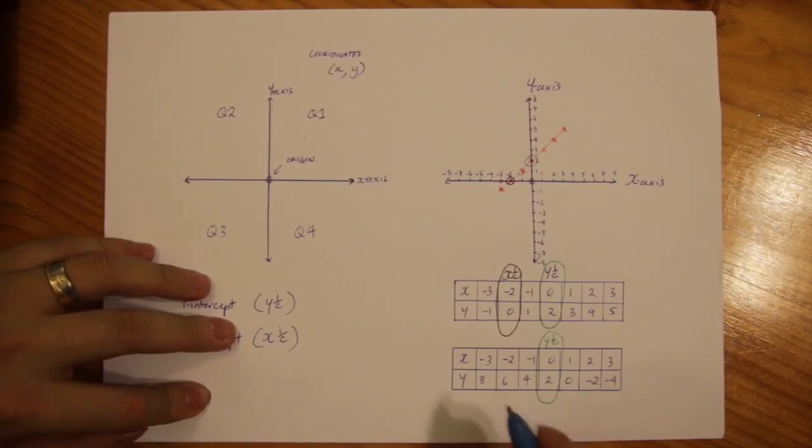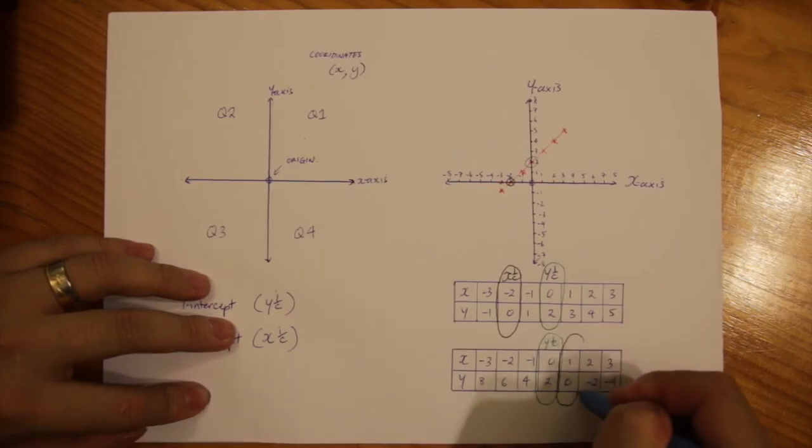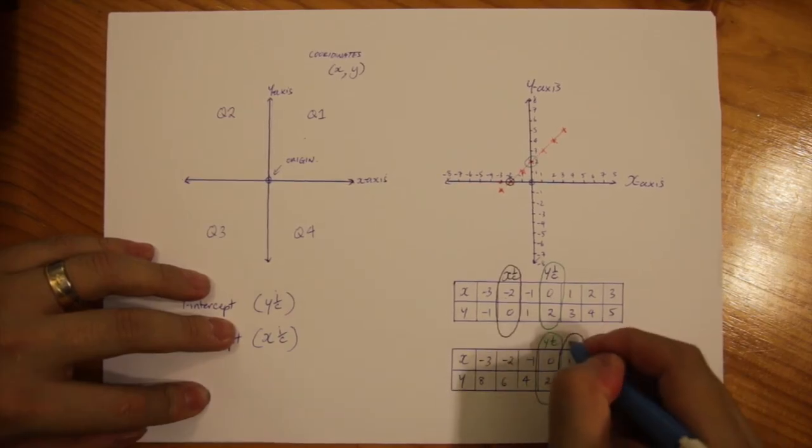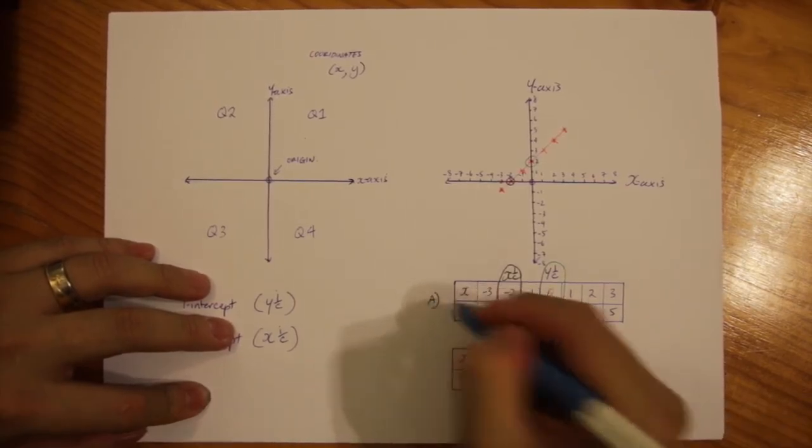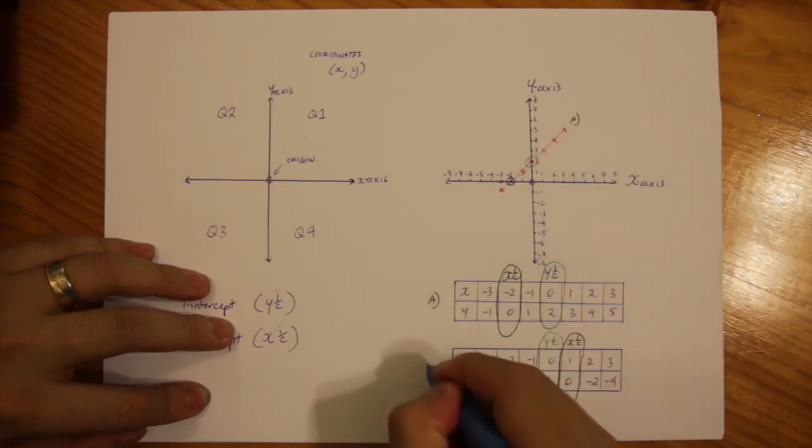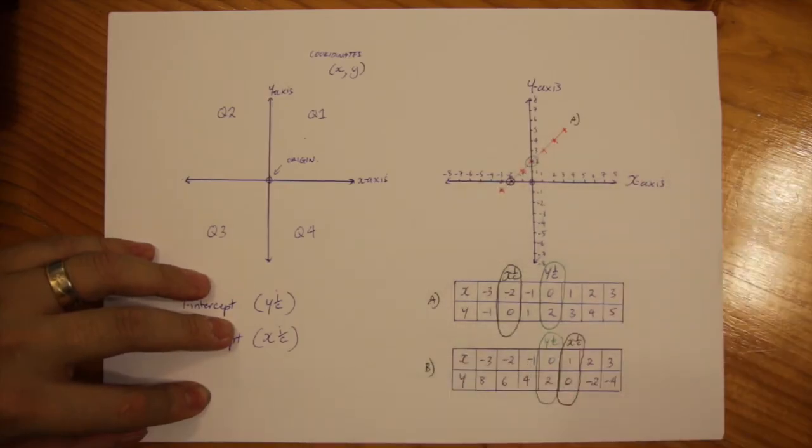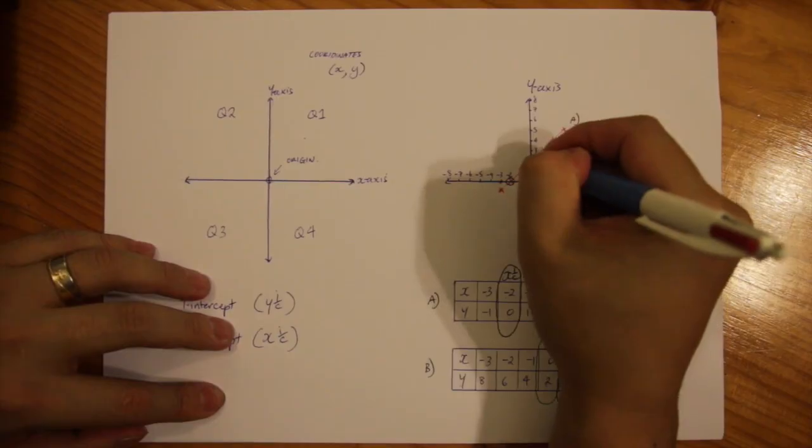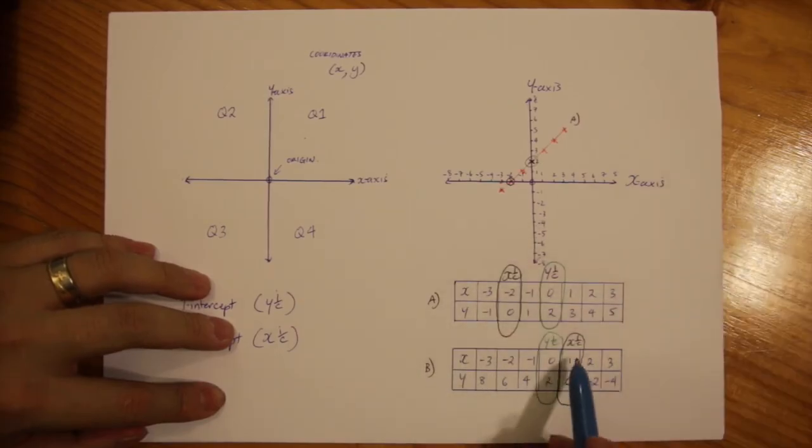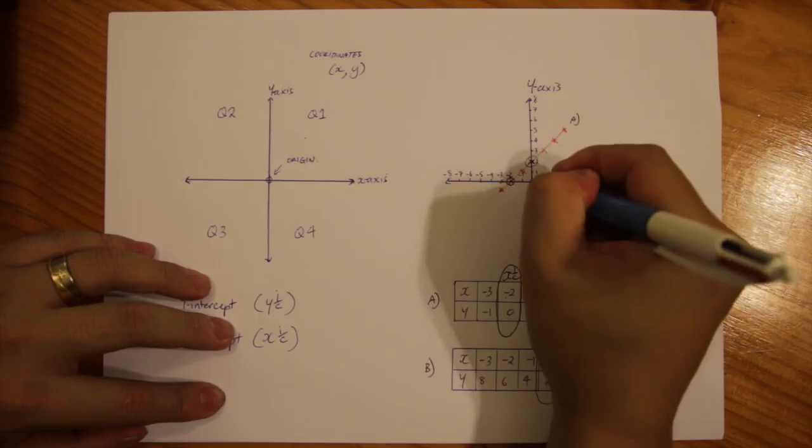If you then find where y equals 0 then that is going to be the value of your x-intercept. So, this is graph A which is that one and this is going to be graph B. So, the y-intercept is when it hits 2 which is over here. And the x-intercept is at 1 which is over here.